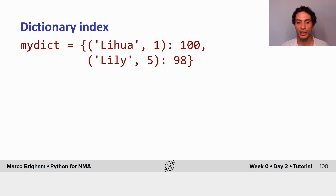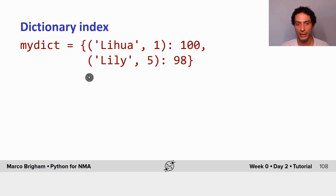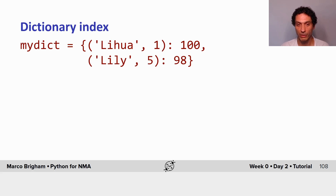Tuples are very interesting in scientific computation to use them as indexes to dictionaries. In this example I create my dictionary with curly braces, and tuples can be keys of dictionaries. Lists cannot be keys of dictionaries because lists change, but tuples — because they cannot change — can be keys and can index the dictionary.